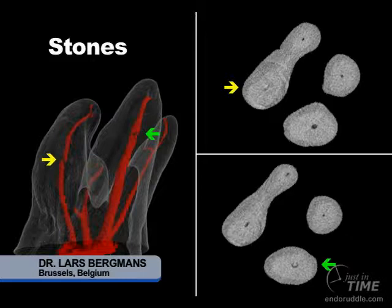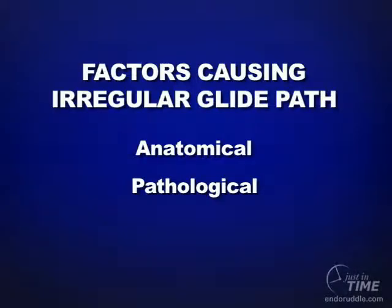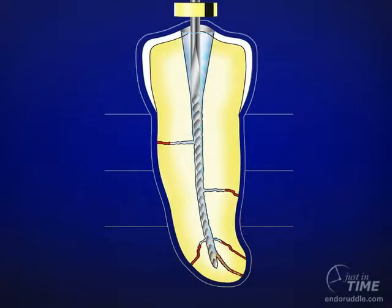We've looked at anatomical instances and pathological conditions. The other instance where we'll frequently not have a regular glide path is in retreatment. Often times bigger instruments were inappropriately carried deep, ledges resulted, and that ledge can prevent a file from easily passing around the curve to length.